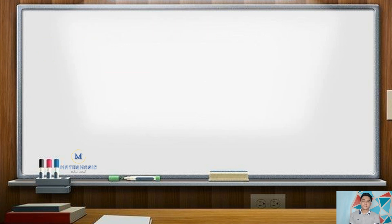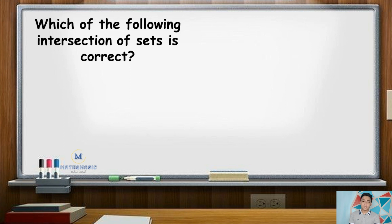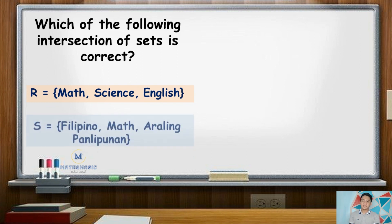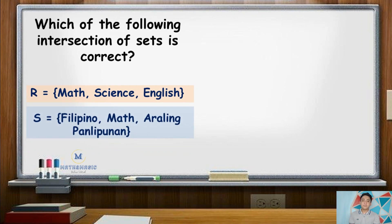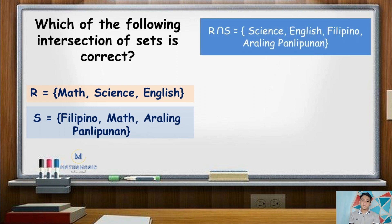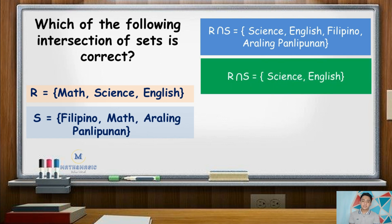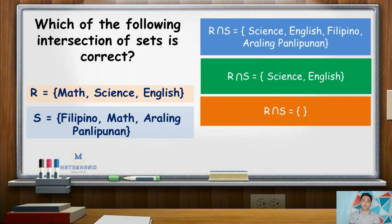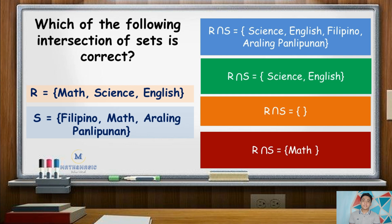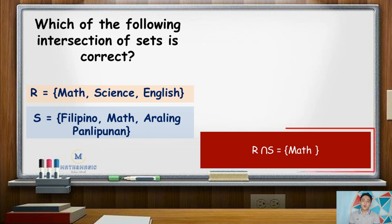Now it's your turn. Which of the following intersection of sets is correct? Given that R contains the elements Math, Science, and English, while set S contains Filipino, Math, and Araling Panlipunan. The correct answer is letter D: R intersection S has the element Math, since only Math is common to both sets R and S.